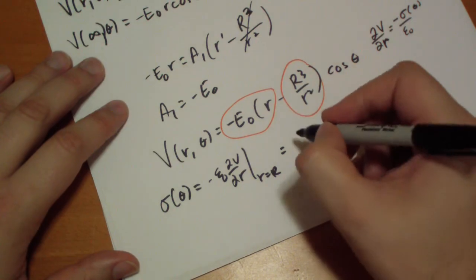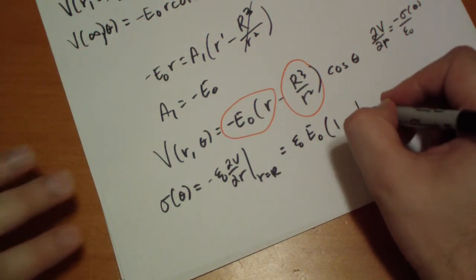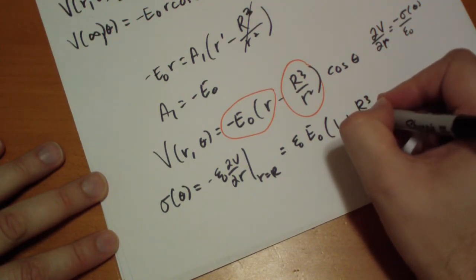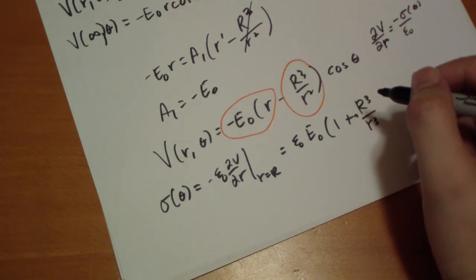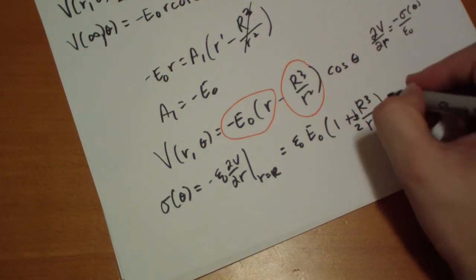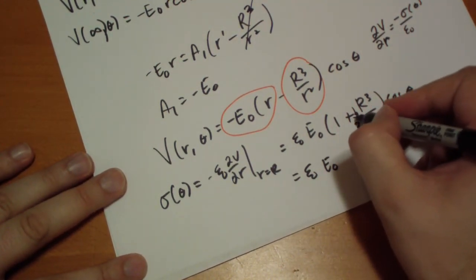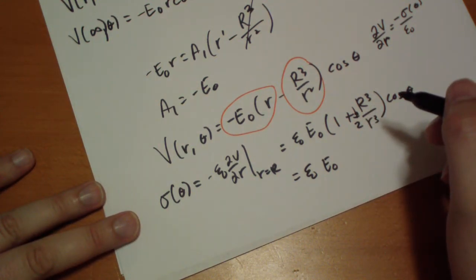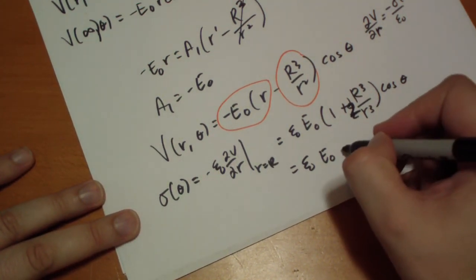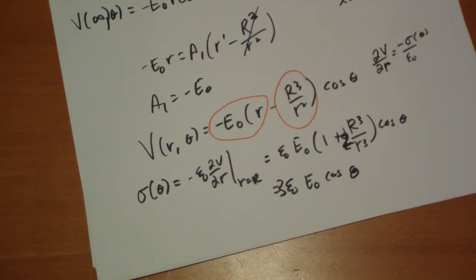We get sigma of theta is equal to negative epsilon naught dV by dR at R equals R. It's on the surface there. So we get epsilon naught E-naught, just one minus R cubed. That becomes R cubed, and we actually have a plus two now. I could be wrong, but I'm pretty sure it should be a plus one half. But Griffiths has three. I'm going to trust Griffiths. R cubed over R cubed is just two, so that's three. So we get three E-naught epsilon naught cos theta. And there you go, that's the surface charge for the sphere.